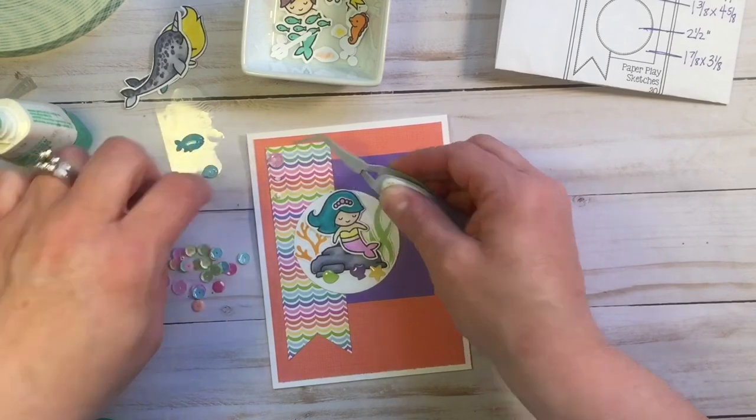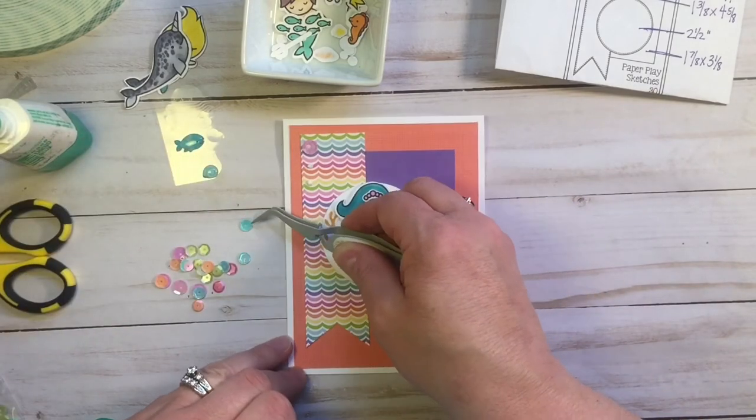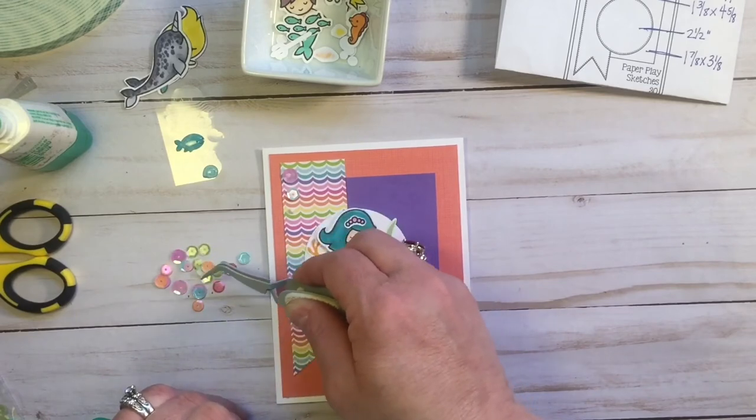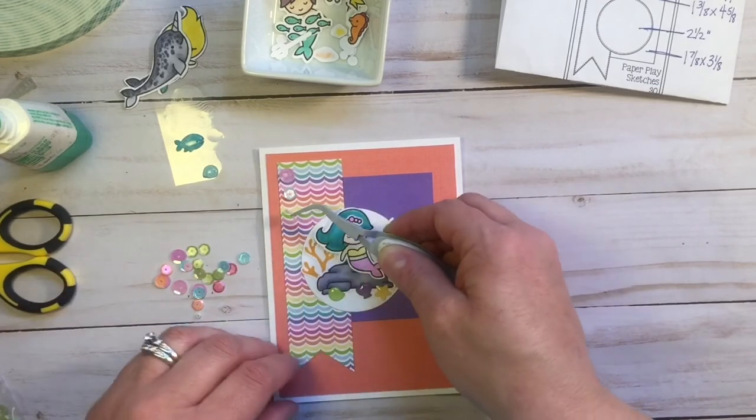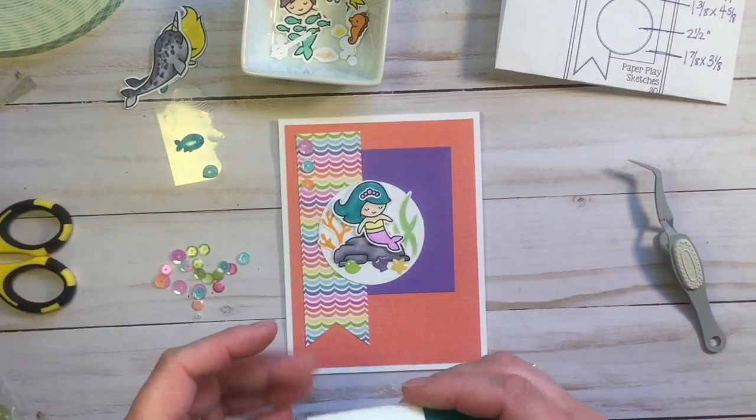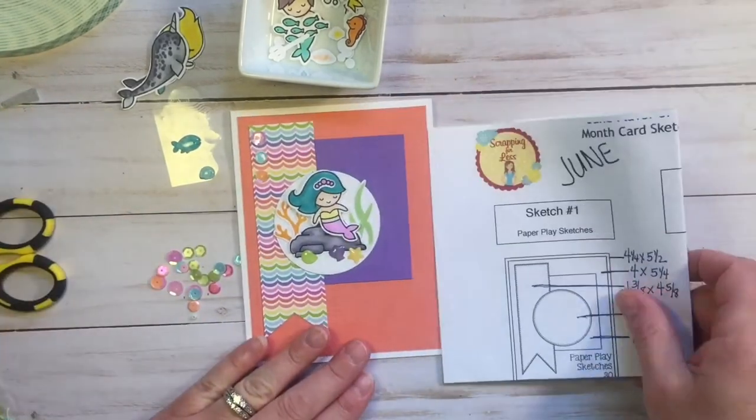You obviously do not need to have a pair of tweezers in order to put on sequins. You can just use your fingers, or if you have a pickup tool or a pickup stick, any of that will work. Or if you have an old tweezers from your makeup kit, you can always use those too.